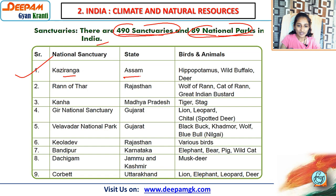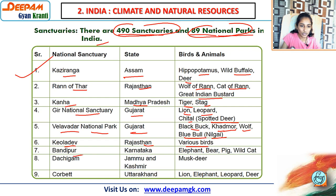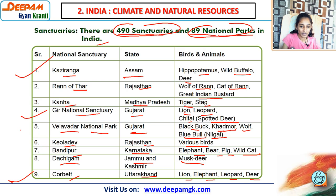Kaziranga in Assam is famous for hippopotamus, wild buffalo, and deer. Rann of Thar in Rajasthan is known for wolf, cat of Rann, and Great Indian Bustard. Kanha National Sanctuary in Madhya Pradesh is known for tigers. Gir National Sanctuary in Gujarat is famous for lion, leopard, and cheetah (spotted deer). Vedavadar National Park in Gujarat is known for blackbuck, Kharamore, wolf, and blue bull (Nilgai). Keoladeo in Rajasthan is known for various birds. Bandipur National Sanctuary in Karnataka is known for elephant, bear, pig, and wild cat. Dachigam National Sanctuary in Jammu and Kashmir is known for musk deer. Corbett in Uttarakhand is known for lion, elephant, leopard, and deer. Remember especially Kaziranga, Gir, Vedavadar, and Corbett.